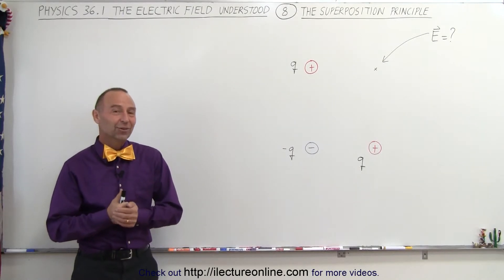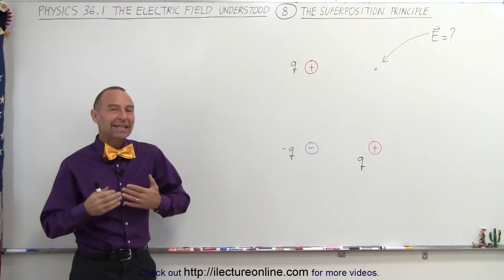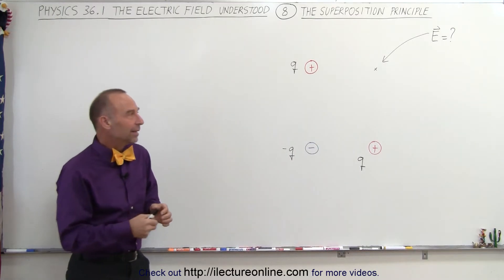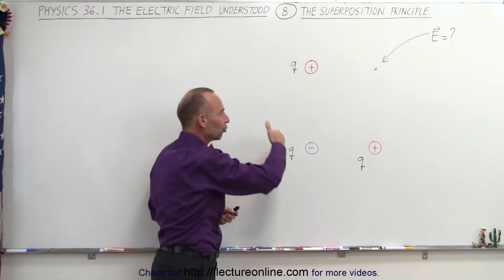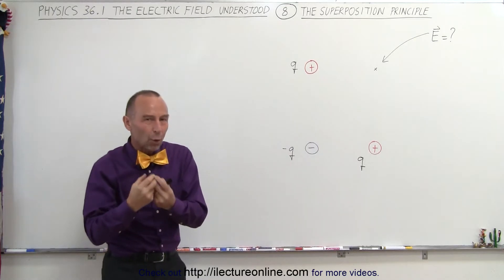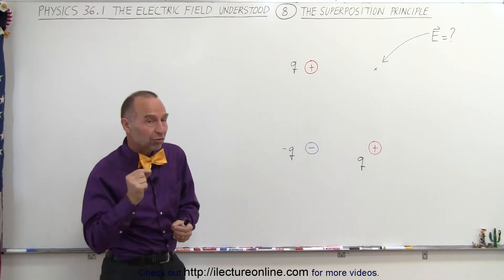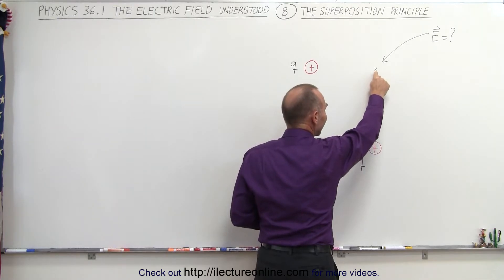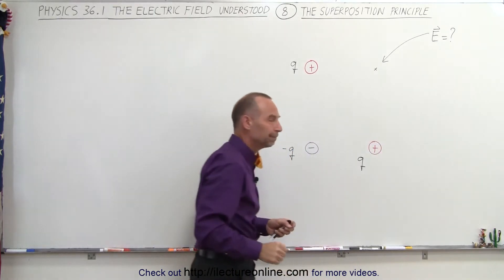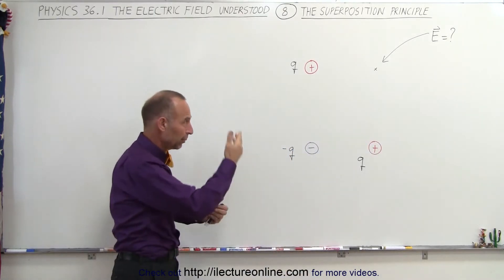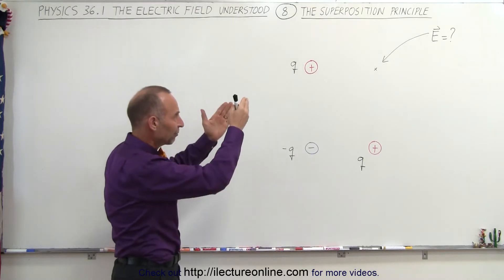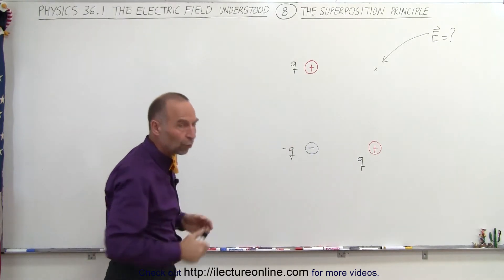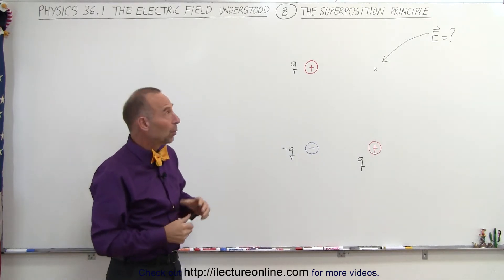Welcome to ElectronLine. So what do we mean by the superposition principle? It's applied in the case where we have multiple source charges, each creating their own electric field, and we're interested in knowing what the electric field is like at some point — let's say right there. That could be any arbitrary point, but we just picked that one. What is the electric field equal to over there, because there are now three sources creating electric fields?